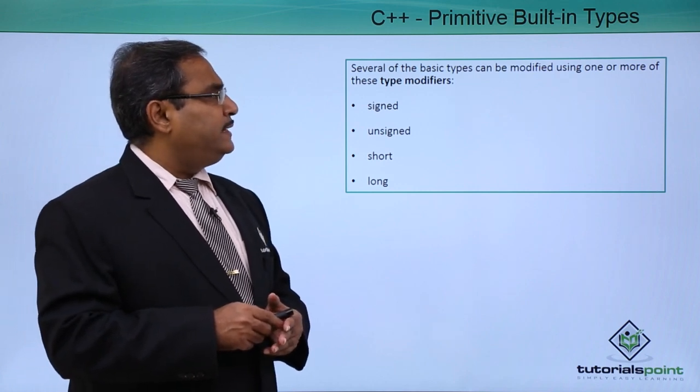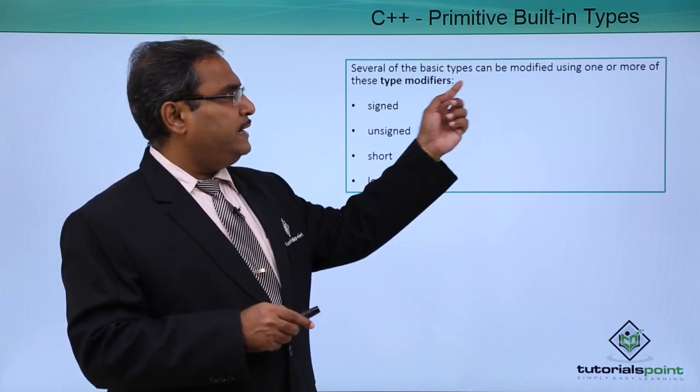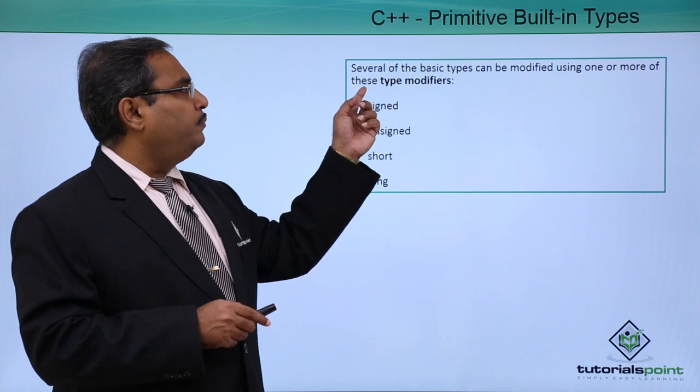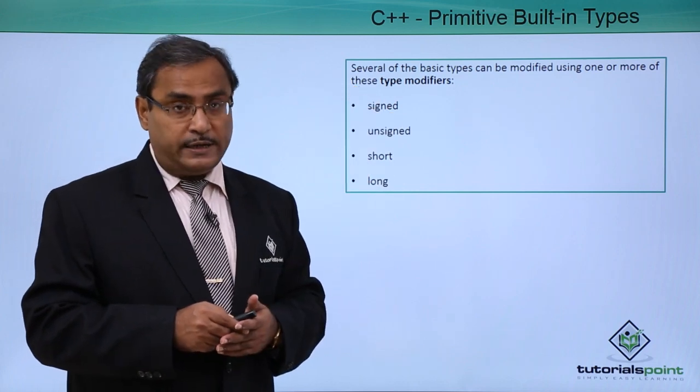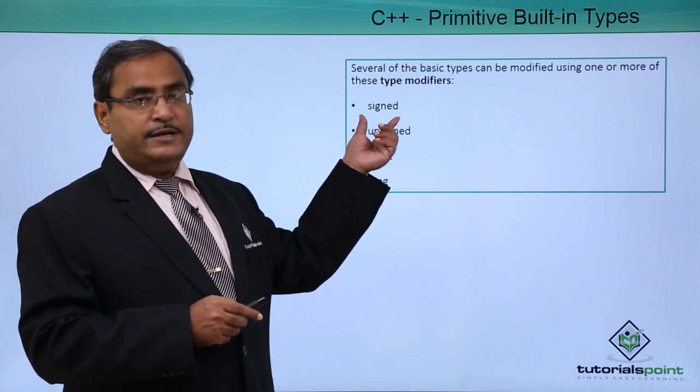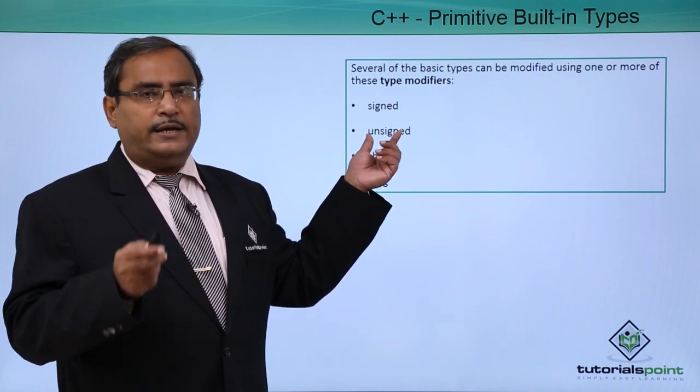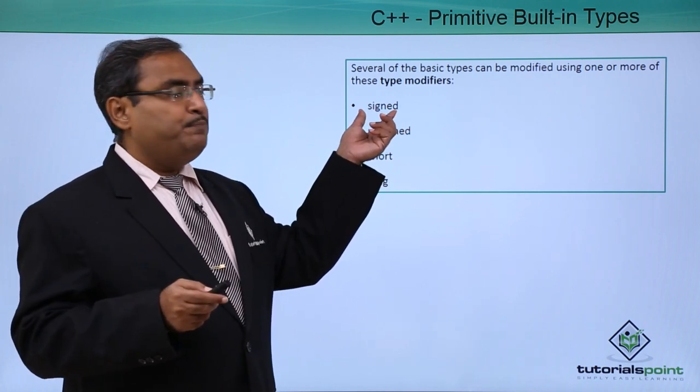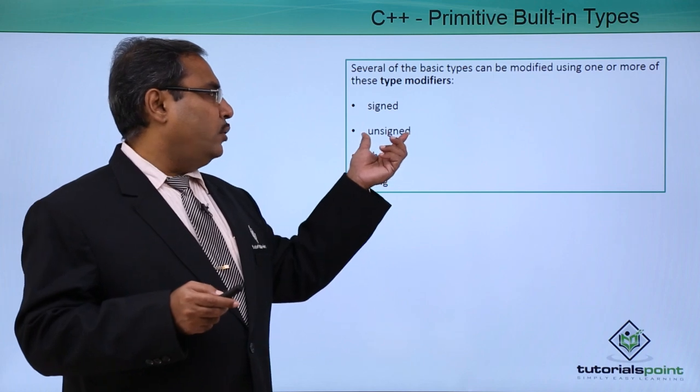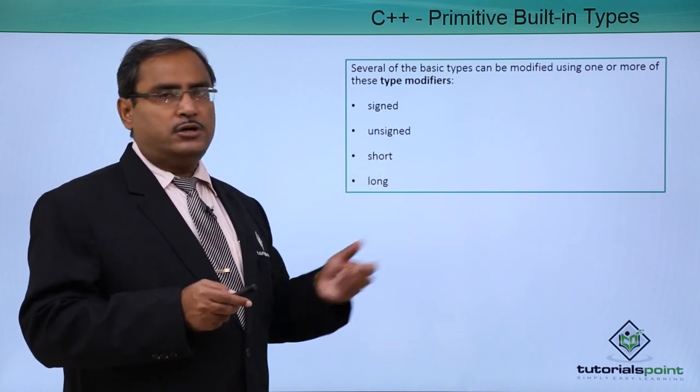Several of the basic data types can be modified using one or more type modifiers. We can have signed, we can have signed int or unsigned int. This is the type modifier in that case. We can also have unsigned, short, and long.